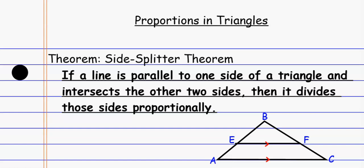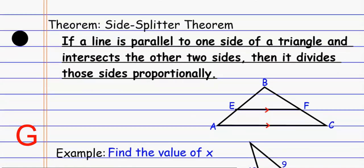Hi there, folks. Today we're looking at proportions in triangles. We've already investigated certain proportions in special kinds of triangles, like in right triangles, looking at the geometric mean and some of the proportions that exist there. But now we're going to look at some of the other proportions that exist as we start to draw things within the triangles. For example, this first one — this is the side splitter theorem.